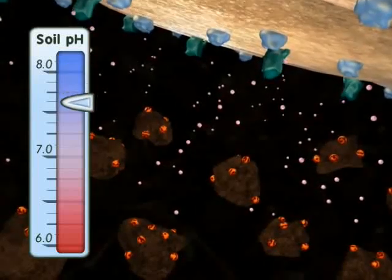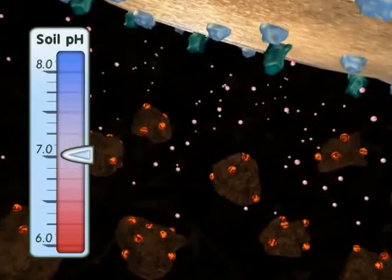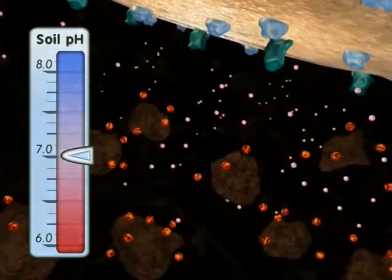As the pH drops, iron is released from the soil particles and becomes available as soluble iron.